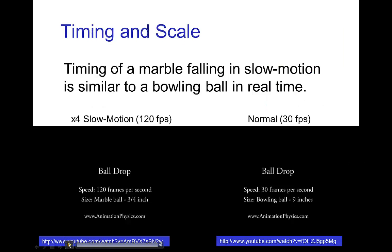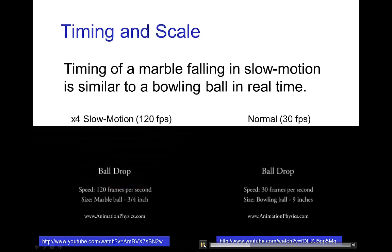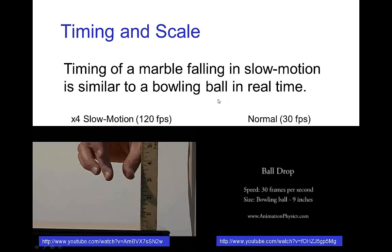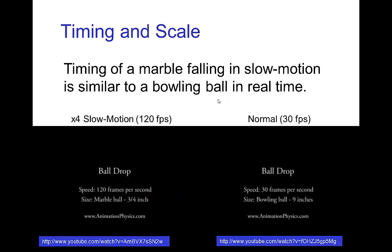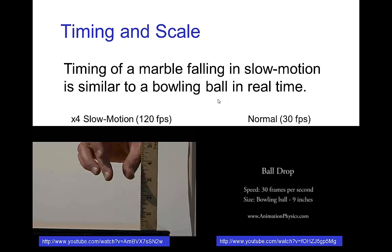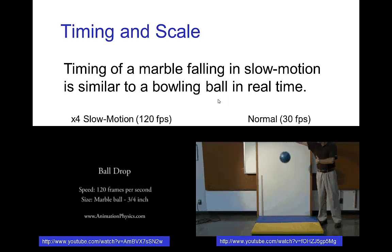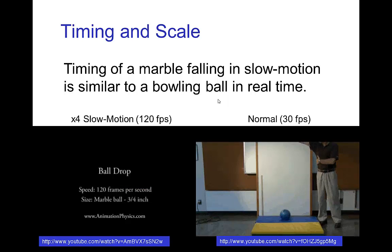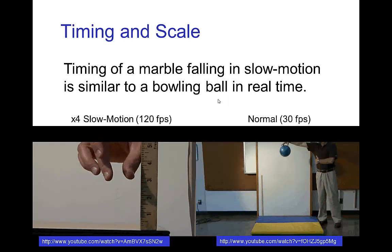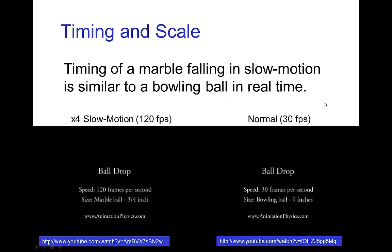Here's a recording of a marble shot in slow motion and a bowling ball dropped with normal timing. Just looking at these over and over again, if you didn't see the hand and were just watching the ball, the timing is similar in both — because we used slow motion for the smaller object, which makes it look as if it's falling similarly to the larger bowling ball.